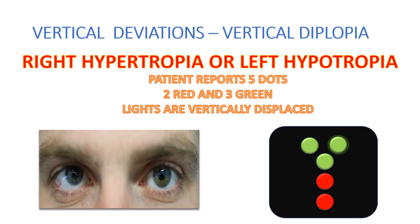The next type of diplopia is vertical diplopia, which is seen in vertical deviations. Again, the person will see five lights, two red and three green, but the lights are vertically displaced relative to one another. The examiner can relate the position of the light to the deviation of the eye. The higher lights belong to the lower eye and the lower lights belong to the eye which has a higher position. The green light from the left eye being on top of the red light indicates the patient has got right hypertropia or left hypertropia.